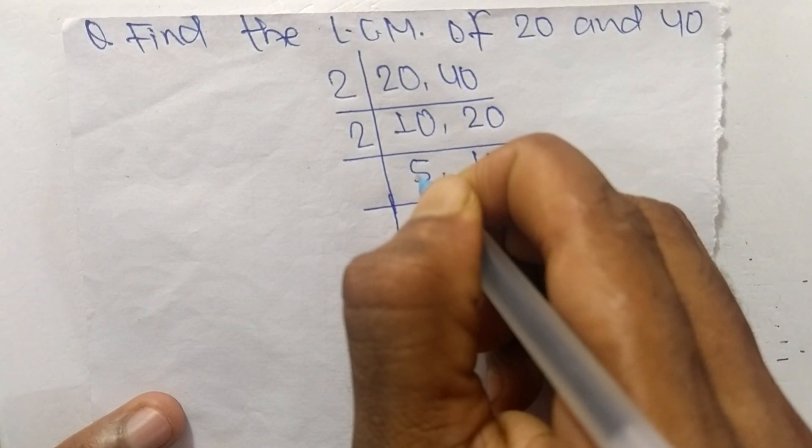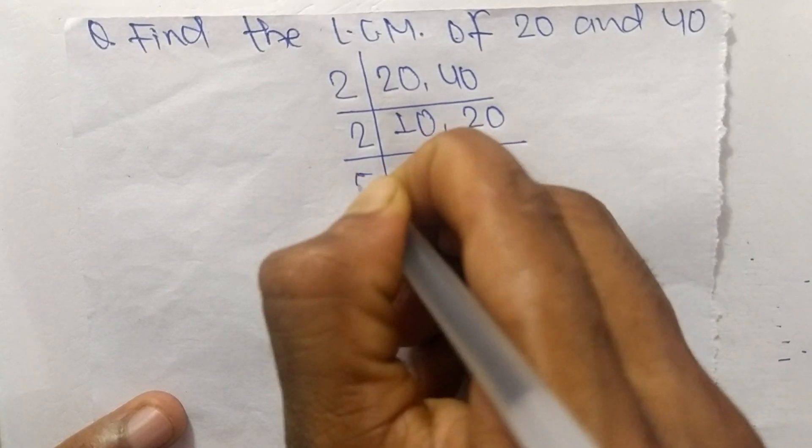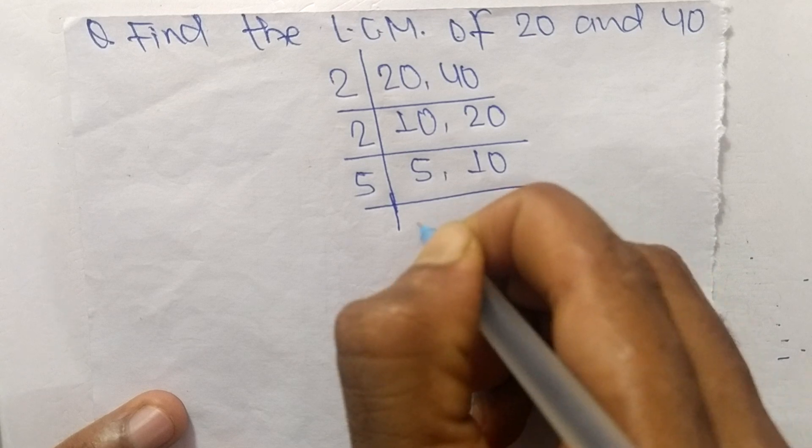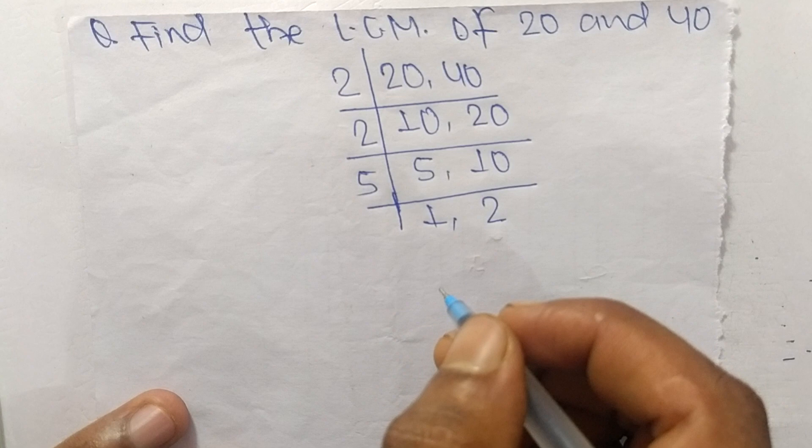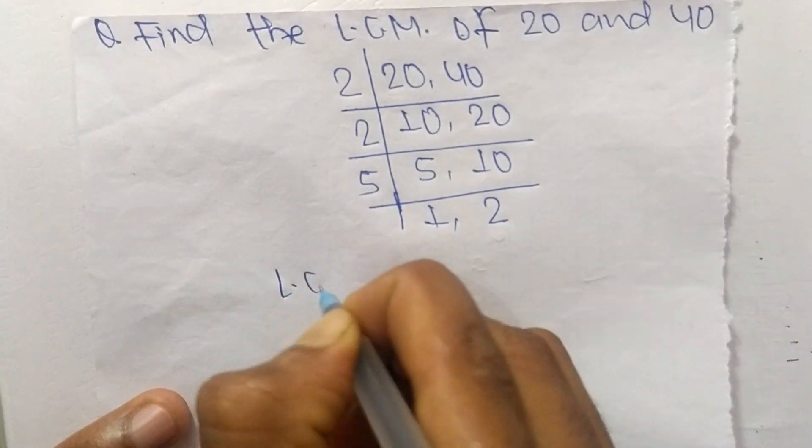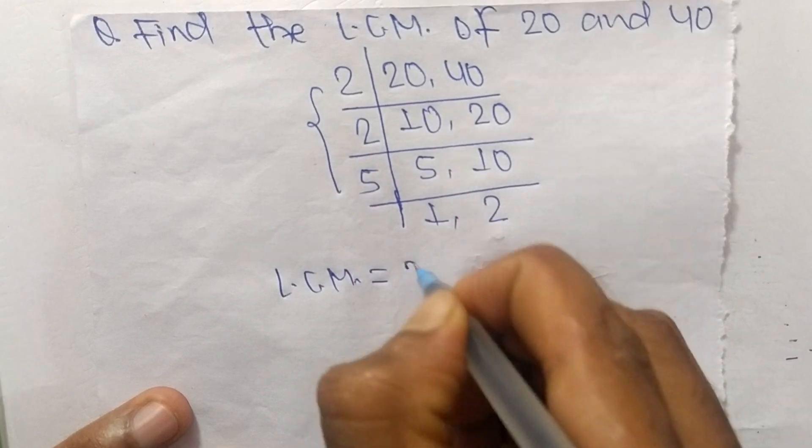So we take the number greater than 2, which is 5. So 5 times 1 means 5 and 5 times 2 means it is 10. So its LCM is equal to, from this part it is 2 times 2 times 5, and from this part it is 1 times 2.